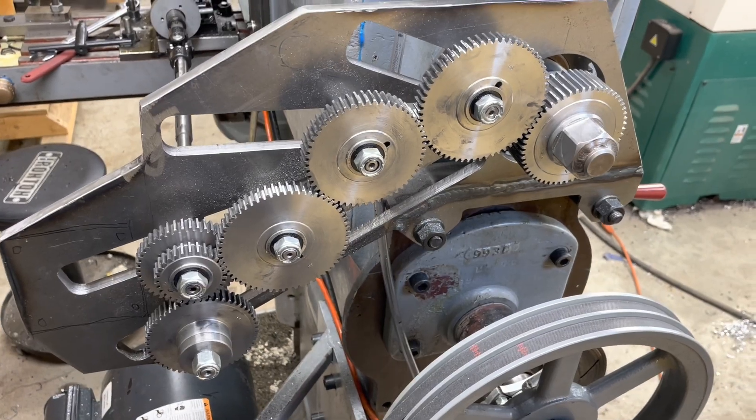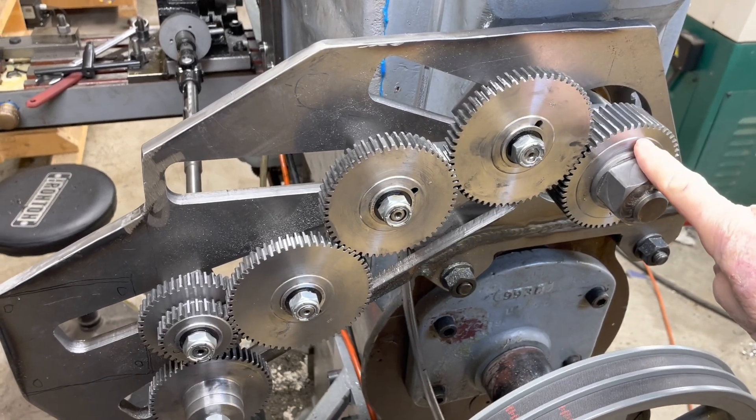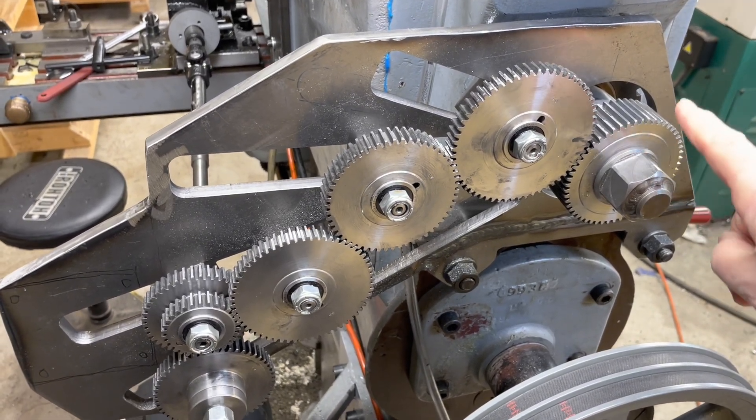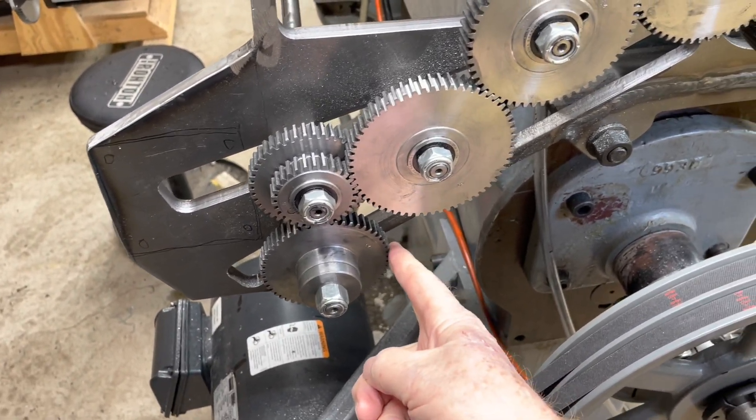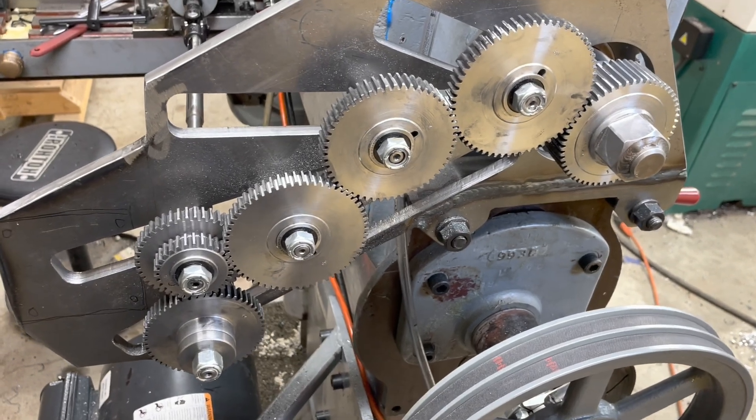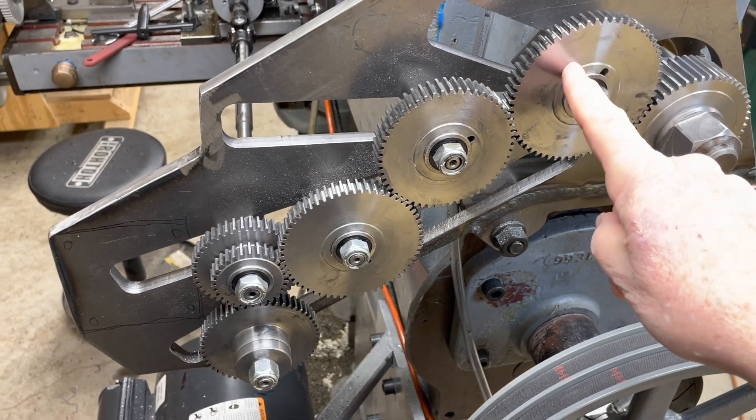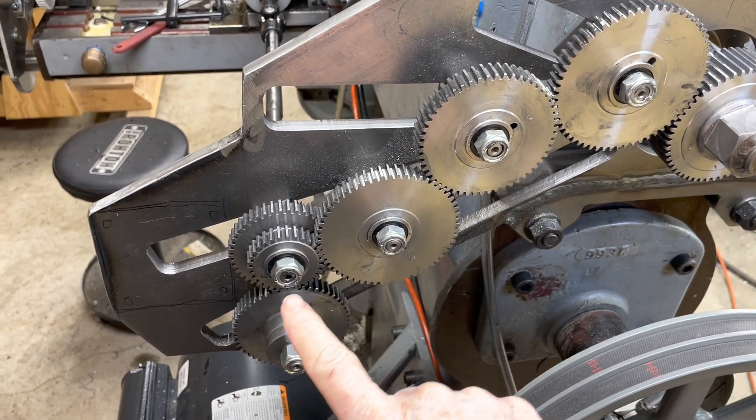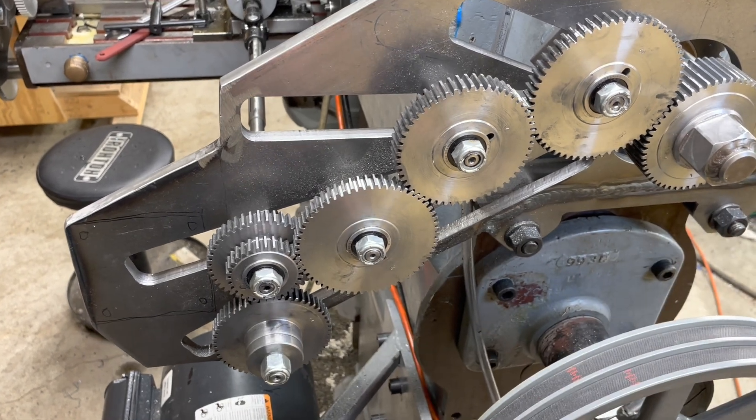Just a couple of quick notes about the design. I selected a 54-tooth gear for the spindle end and a 54-tooth gear for the output end of the index train. And basically what that means is that if I only had one layer of gears all the way down, it would be a one-to-one train.